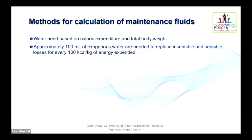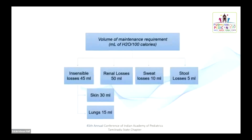Approximately 100 ml of exogenous water are needed to replace insensible and sensible losses for every 100 kilocalories per kg of energy expenditure. Insensible water loss is around 45 ml — skin accounts for 30 ml and lungs for 15 ml. Sensible water loss includes renal losses, sweat, and stool, but sweat and stool are negligible, so sensible water loss usually measures renal loss.